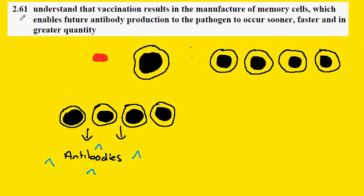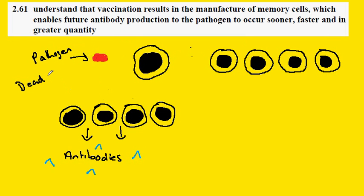IGCSE Biology Syllabus Statement 261: Vaccination. In vaccination, the pathogen which is presented to the system is either dead or weakened. The biological word for weakened is attenuated.